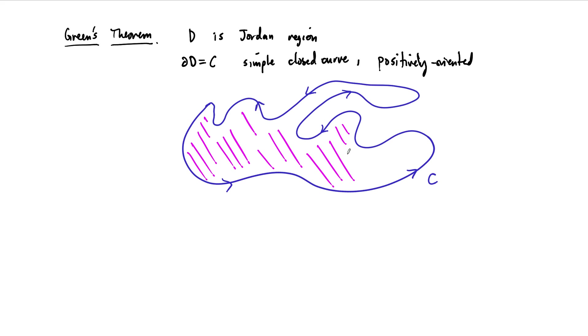And this symbol, partial D, just represents the boundary of this region, which is positively oriented. Positive orientation means that as you travel around this blue boundary, the region D is always to your left-hand side. So C here is the boundary of D.